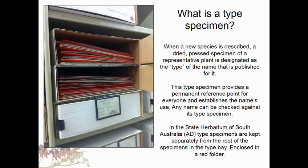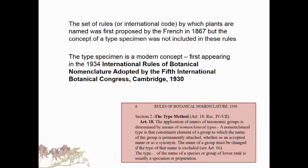Here in South Australia we have a lot of type specimens, kept separately in a type bay in red folders. The rules of international nomenclature by which plants are named were first proposed by the French in 1867, and in those rules there was no concept of a type specimen - which is quite surprising. The concept of the type specimen is actually a modern one.